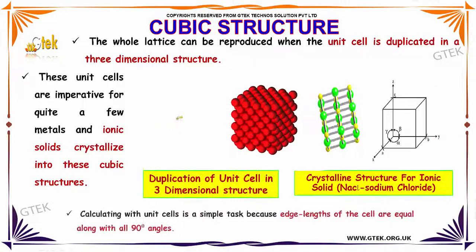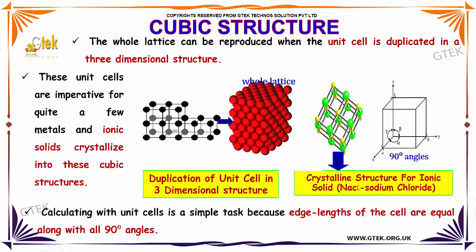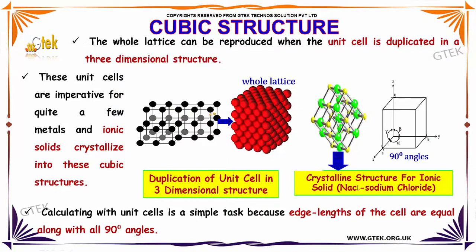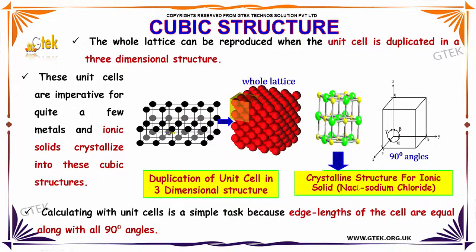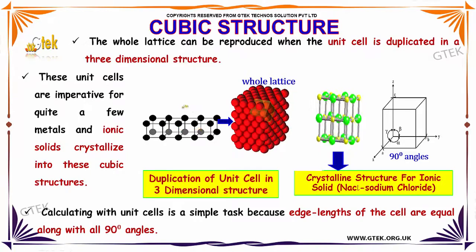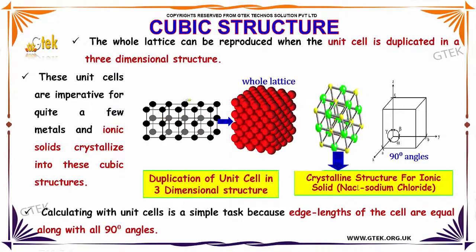In a cubic structure, the whole lattice can be reproduced when the unit cell is duplicated in a three-dimensional structure. These unit cells are imperative for quite a few metals and ionic solids that crystallize into these cubic structures.